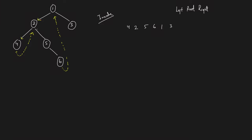But if you're doing it iteratively and you've gone from one to two, two to four, there is no way you can come back to two because there is no parent pointer. We cannot introduce a parent pointer because a binary tree always has only a left pointer and a right pointer.